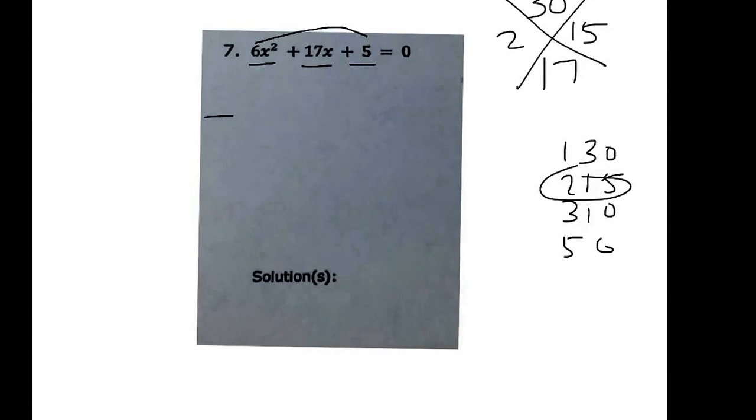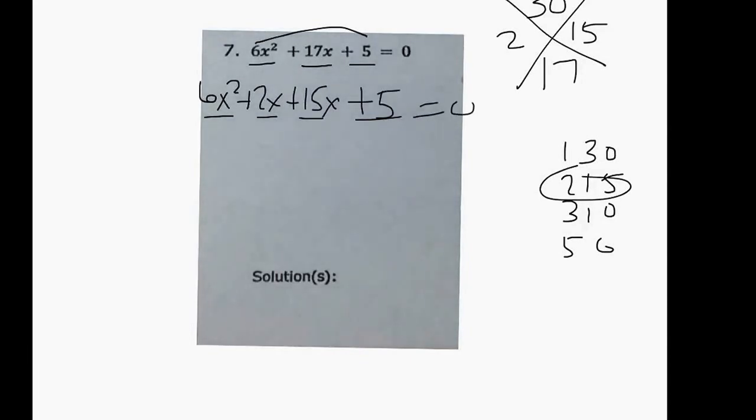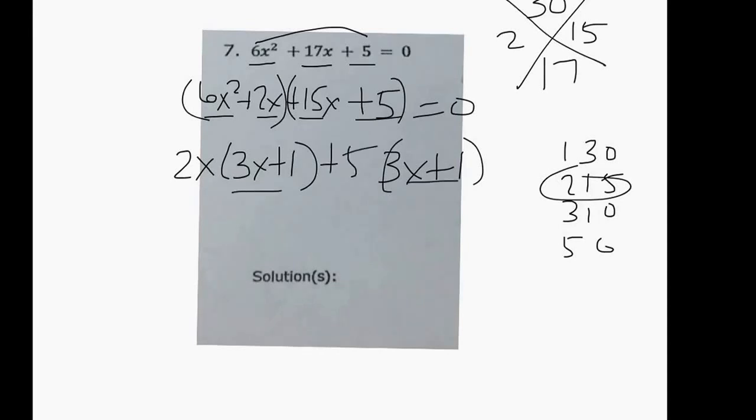So we write our 4 parts: 6x² + 2x + 15x + 5 = 0. We group, that has a 2x in common so it's 3x + 1, this is also going to be 3x + 1 and those have a 5 in common, so our factors are 3x + 1 and 2x + 5.